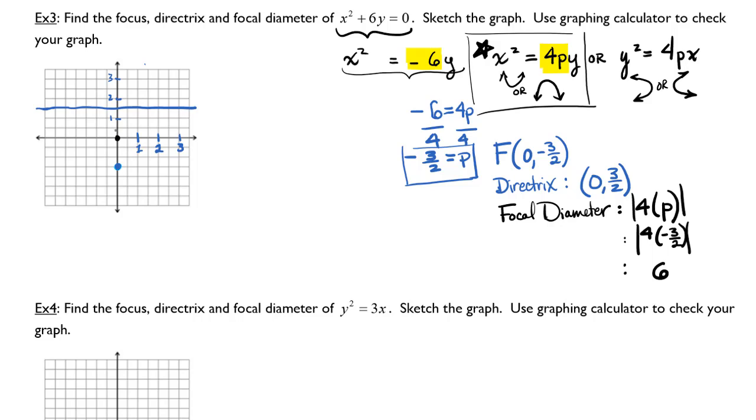And now that I have the focal diameter, I just break this into two parts: 3 to the left and 3 to the right of the focus. And now I just make my parabola have that general shape.